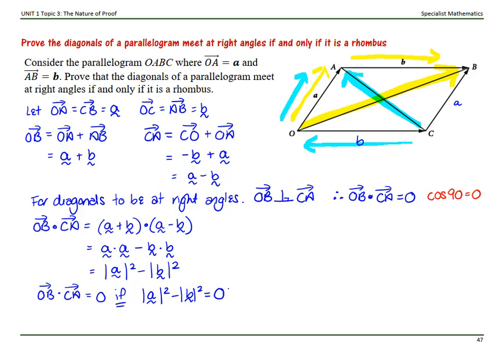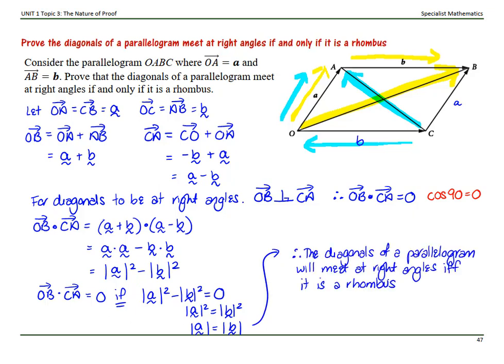Because we need our dot product to equal zero, that means the magnitude of a squared has to equal the magnitude of b squared, which means the magnitude of a has to equal the magnitude of b. So our length of a has to equal the length of b, meaning our diagonals are only going to be at right angles if the parallelogram is a rhombus. And our proof is done. Thank you.